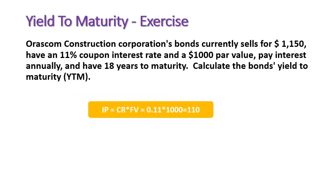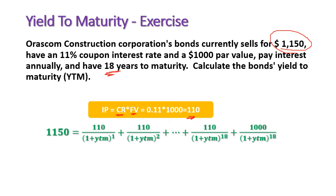First, find the coupon payments: coupon rate of 11% times face value of 1,000 equals 110 dollars per year. If you buy this bond today at 1,150, you will receive 110 at the end of each year for the next 18 years. The standard form equates the bond market price to the present value of the periodic interest payments of 110 and the present value of the face value of 1,000 received after 18 years.